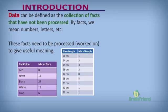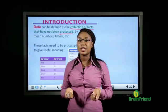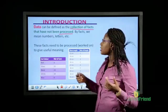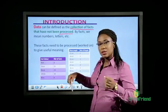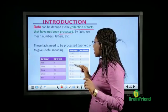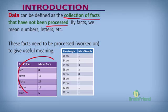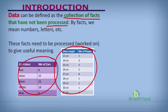What is data? Data can be defined as the collection of facts that have not been processed. By facts, we mean letters, numbers, and so on. These facts have to be processed to give a useful meaning. For example, the number of cars is a raw fact. The collection of the length of shoes is also called data — it's a raw fact.